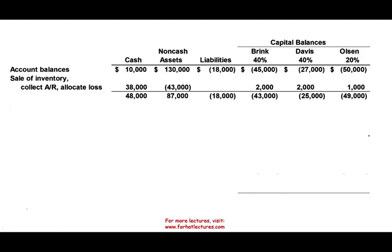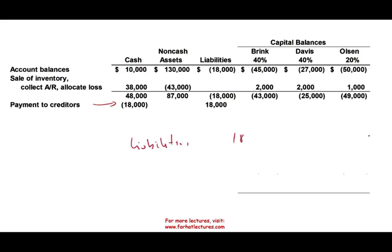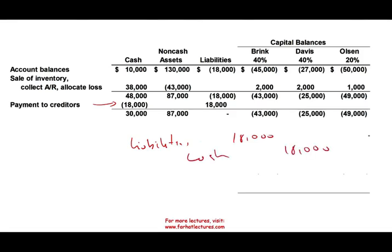Since we now have enough money to pay the creditors — we only had $10,000 before and had $18,000 of liabilities — we can now pay them. We debit liabilities $18,000 and credit cash $18,000. After paying creditors, we still have $30,000 cash on hand and $87,000 of non-cash assets remaining. These are the updated balances for the partners.